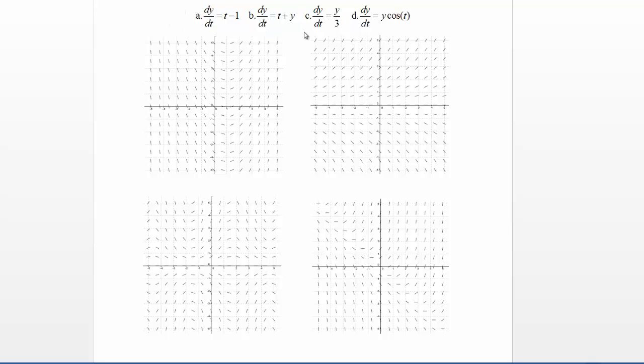Here I'm given four differential equations. A is dy/dt equals t minus 1, B is dy/dt equals t plus y, C is dy/dt equals y over 3, and D is dy/dt equals y times cosine t.